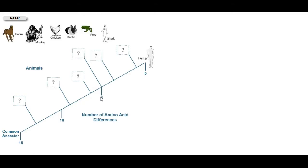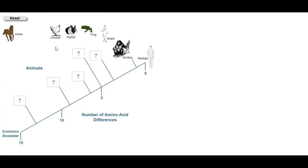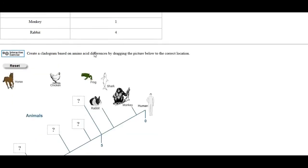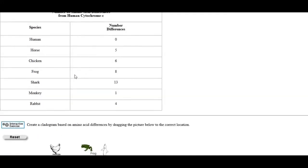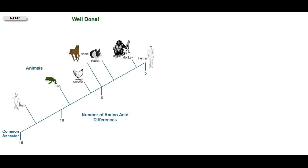You've got these numbers here to indicate the number of amino acid differences. So we said that the monkey was the second closest, then it was the rabbit, then the horse, then the chicken, then the frog, and then the shark. If you've done it correctly, it will tell you 'well done.' So again, this is a way of showing that there are relationships between species by comparing the number of amino acids.